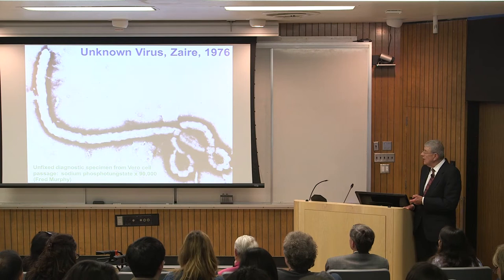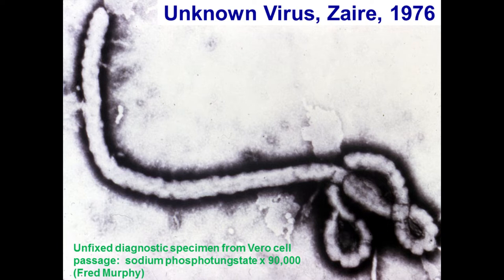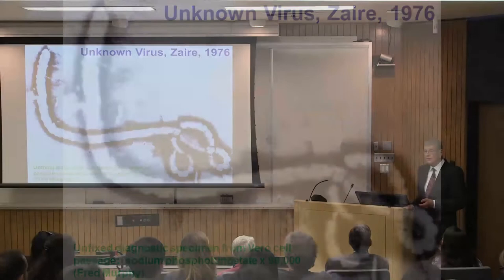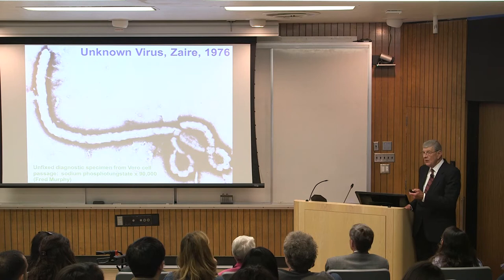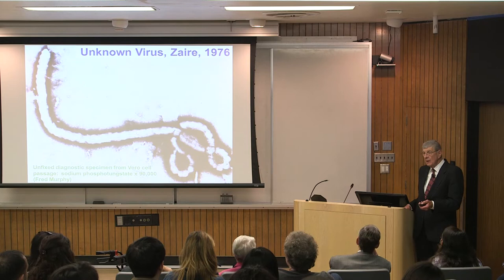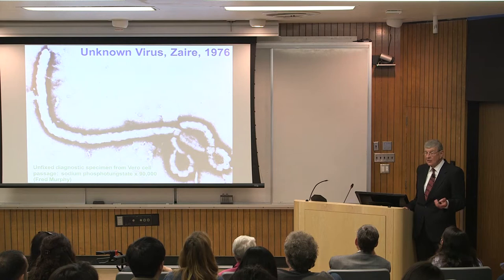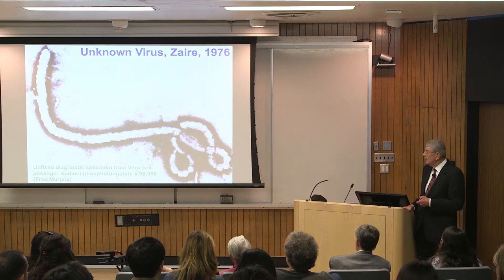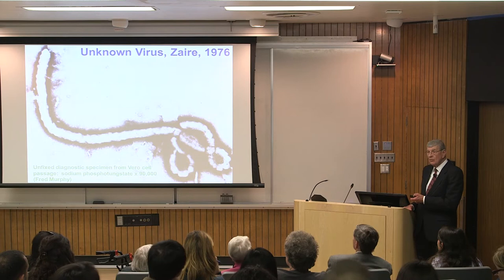A few days before we left, specimens were taken from patients in DR Congo and sent to Antwerp — recall there was a 100-year history of the Belgians colonizing this area. From Antwerp, specimens were sent to Porton Down, England, which had a maximum containment laboratory, and then on to the CDC. All three laboratories saw a similar virus to the one that had occurred in 1967, so they thought it was Marburg.